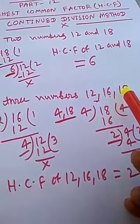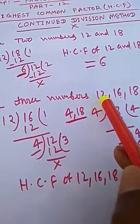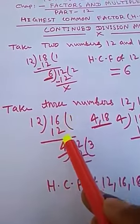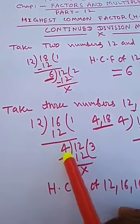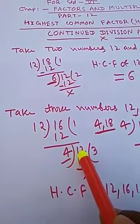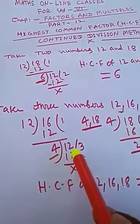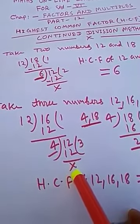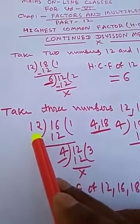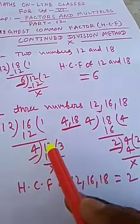Now take another example with three numbers: 12, 16, and 18. We shall take any two numbers first — let's take 12 and 16. We divide 16 by 12: 1 time, remainder is 4. Now 4 will divide the divisor 12: 3 times, remainder is 0. So the last divisor is 4, meaning 4 is the HCF of 12 and 16.